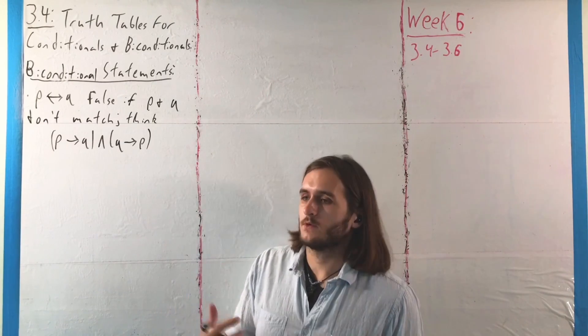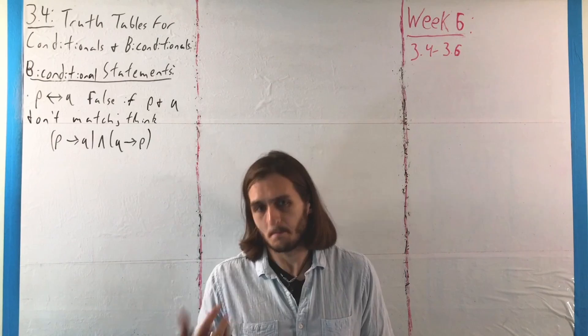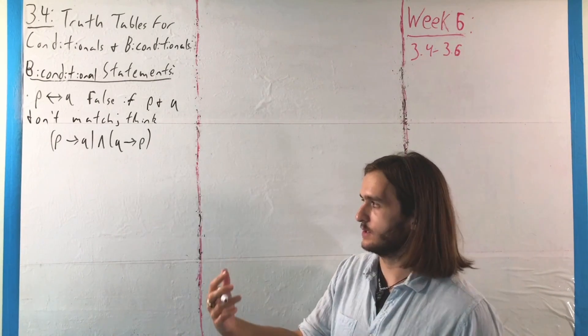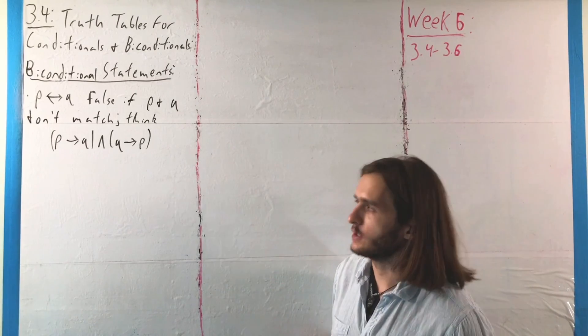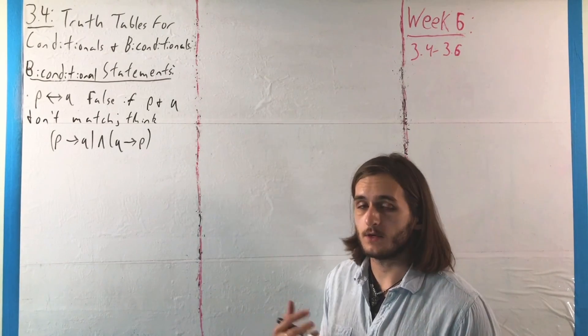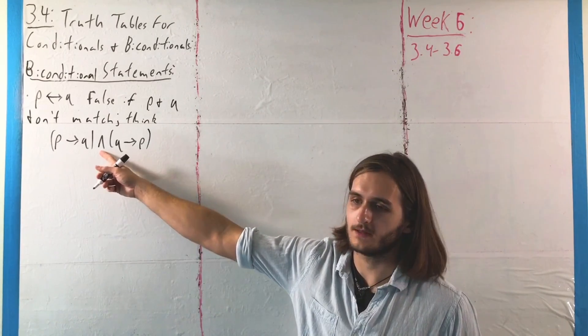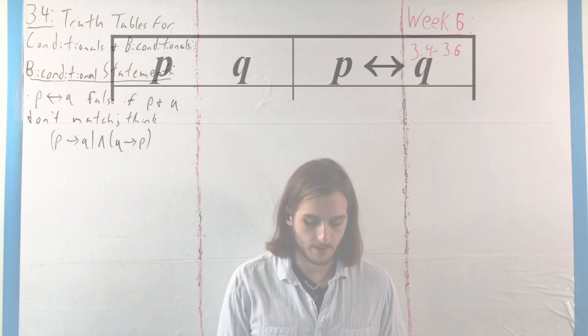That p if and only if q is only false if p and q don't match in truth value. And the reason why that happens is because essentially p if and only if q is the conjunction of if p then q and if q then p. It's the two, like I said, stapled together, or in terms here with that little conjunction symbol. So we're talking about the general truth table there.